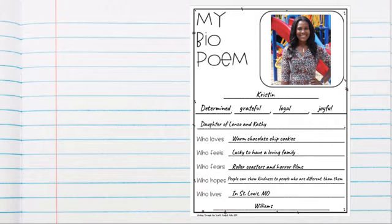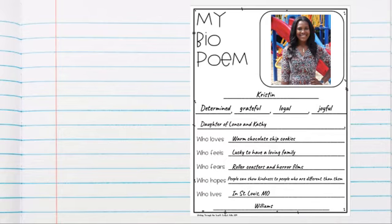Now I will read you my bio poem. Kristen, determined, grateful, loyal, joyful, daughter of Lonzo and Kathy, who loves warm chocolate chip cookies, who feels lucky to have a loving family, who fears roller coasters and horror films, who hopes people can show kindness to people who are different than them, who lives in St. Louis, Missouri. Williams.